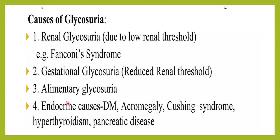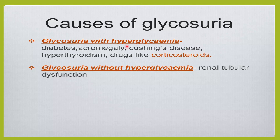Alimentary glycosuria occurs when the GI tract absorbs more glucose from the intestine — for example after a heavy meal, or in a patient who has had bariatric surgery where the stomach has been removed. This causes a spike in blood sugar, but it is temporary and after two hours no glucose will be seen in the urine.